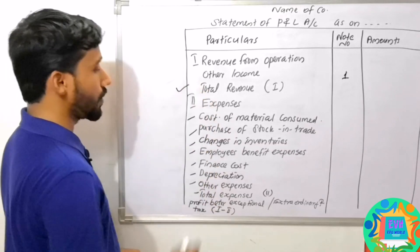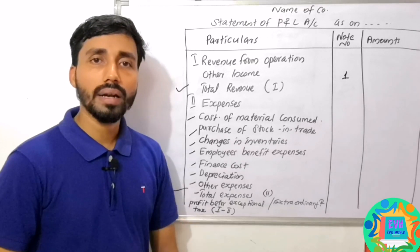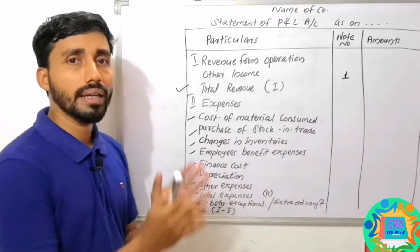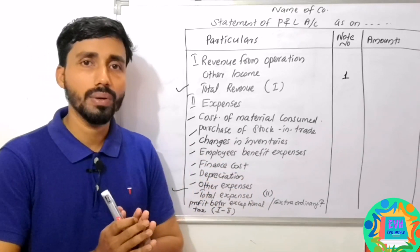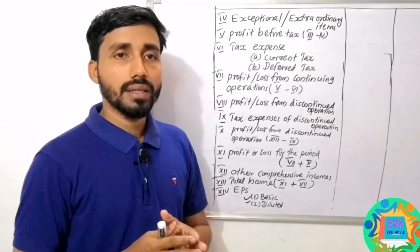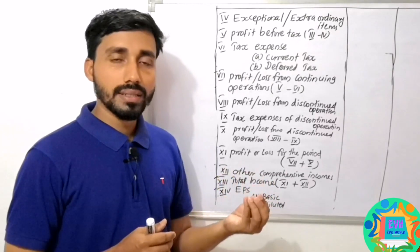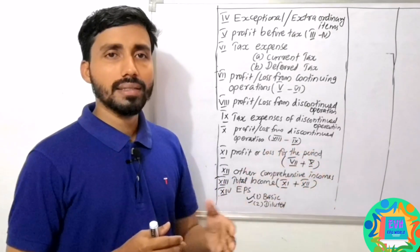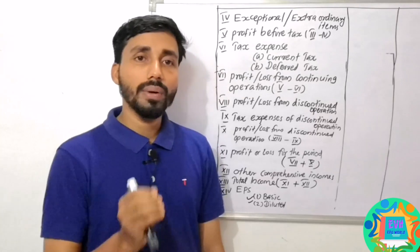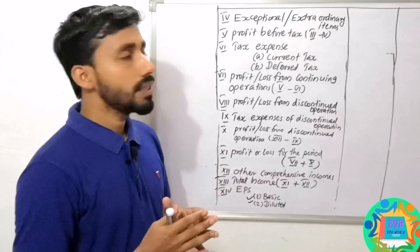The Profit Before Exceptional or Extraordinary Items and Tax. The second part is Exceptional or Extraordinary Items, such as cost of restructuring and legislative changes. If you add your extraordinary income or loss, that gives you Profit Before Tax.